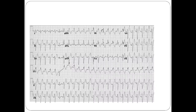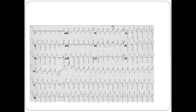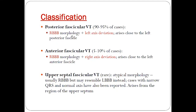You can see here an RBBB pattern with left axis deviation. This is a classical narrow complex tachycardia, as seen in cases of idiopathic fascicular VT.